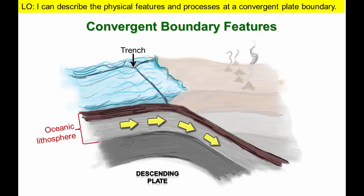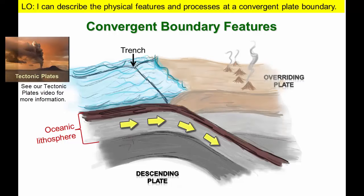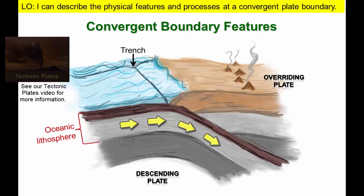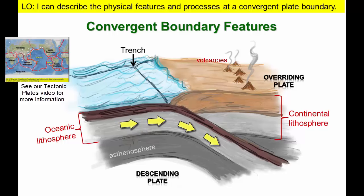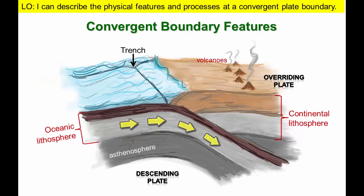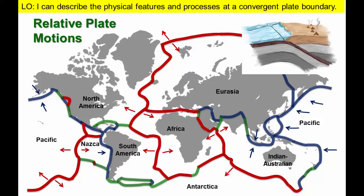We also have an overriding plate that remains at Earth's surface. In this case, the overriding plate is composed of continental lithosphere and has a line of volcanoes some distance from the trench. Both plates rest on top of the asthenosphere in the uppermost part of the mantle.